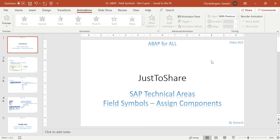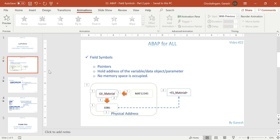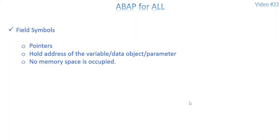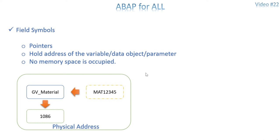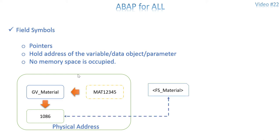Continuing from that, we have a very commonly used concept in field symbols: ASSIGN COMPONENT. What is the use of ASSIGN COMPONENT? This is the previous video slide about field symbols — it just holds the address of the variable, data object, or parameter; it is normally a reference to that. No memory space is occupied and once you create it, it just points to the address of any variable.